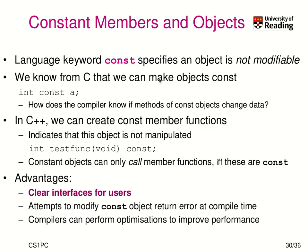Lastly we have constant objects — constant members and objects. What is a constant object? It tells us that the object is not modifiable. We know from C that we can make basic types and objects constant, like 'a' is a constant integer. The problem in C++ is that methods are theoretically able to change the object's state, and we don't know if it's valid to call such a method, because for a const object it should not be able to change it.